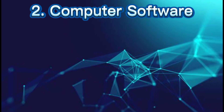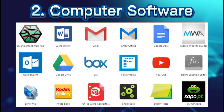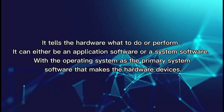The second component is computer software. It tells the hardware what to do or perform. It can either be an application software or a system software, with the operating system as the primary system software that makes the hardware devices work.